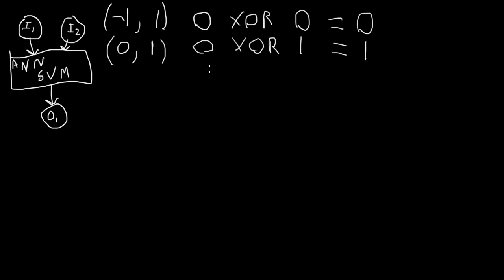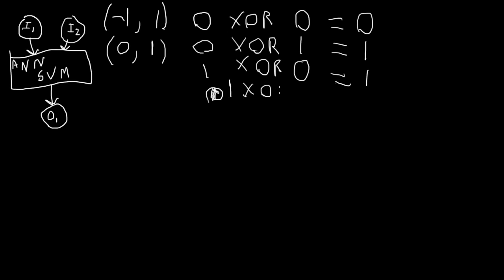The XOR truth table: basically if the two operands are the same it's going to be 0; if the two operands are different it's going to be 1. So the training data would be represented as: 0 and 0, 0 and 1, 1 and 0, 1 and 1. And you provide the neural network with the expected output, which is going to be 0, 1, 1, or 0 depending on which of these inputs you're sending it.